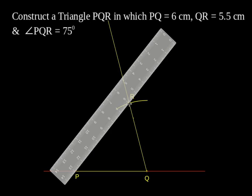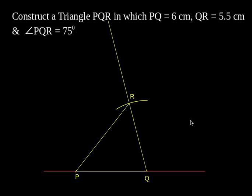Join P and R. Then, PQR is the required triangle in which PQ is equal to 6 cm, QR is equal to 5.5 cm and angle PQR is equal to 75 degree. Thank you.